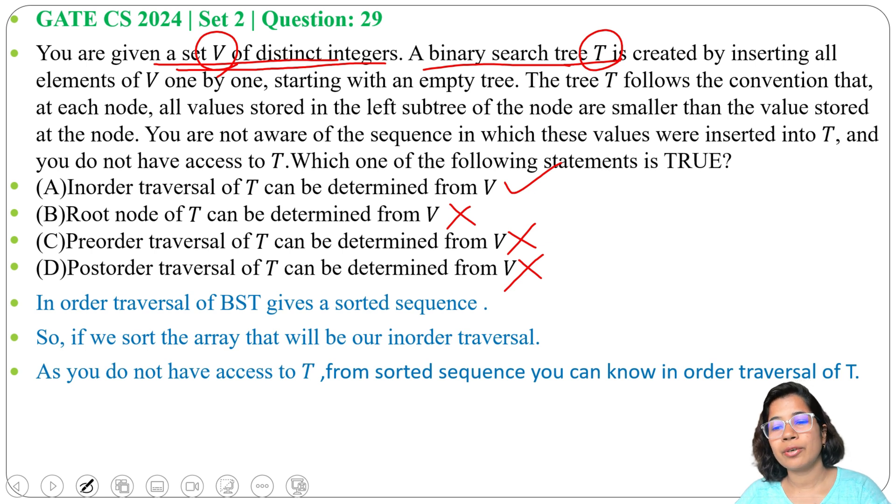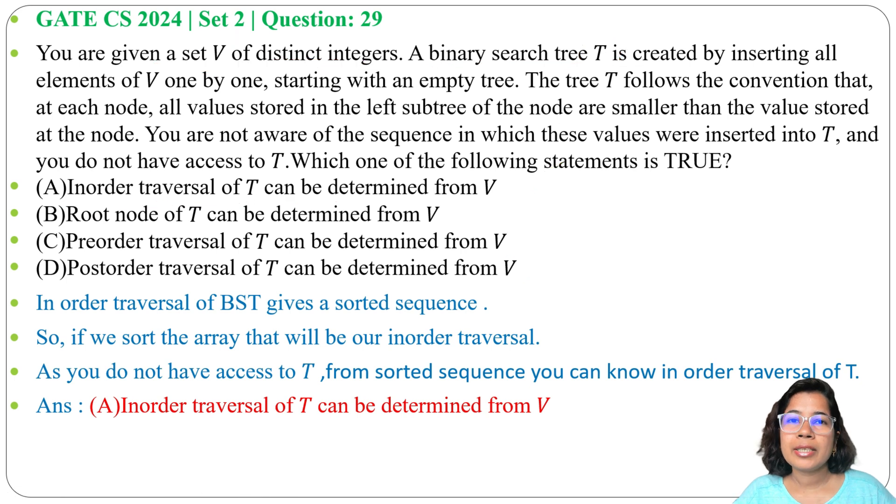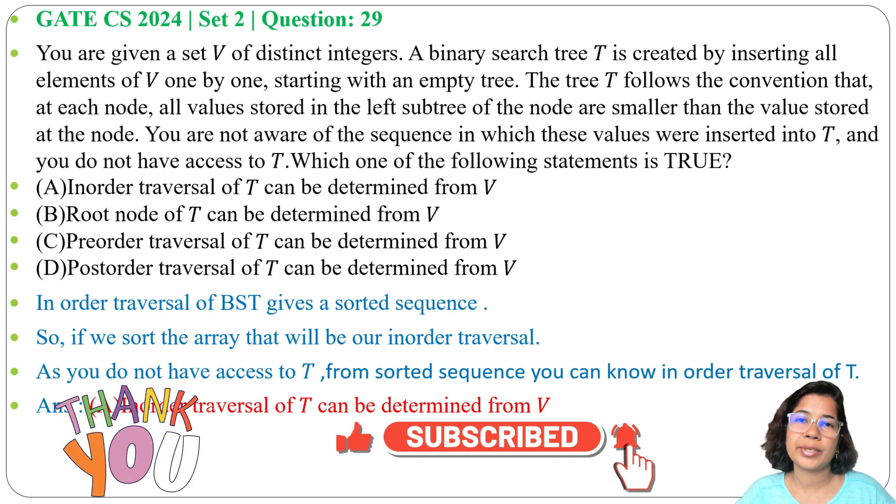from V you can only determine inorder traversal of BST. Not root, not preorder, or not postorder. That's why the answer will be option A. I already discussed binary search tree, just go through the lecture. And if this lecture is helpful for you, please like, share and subscribe. Thank you.